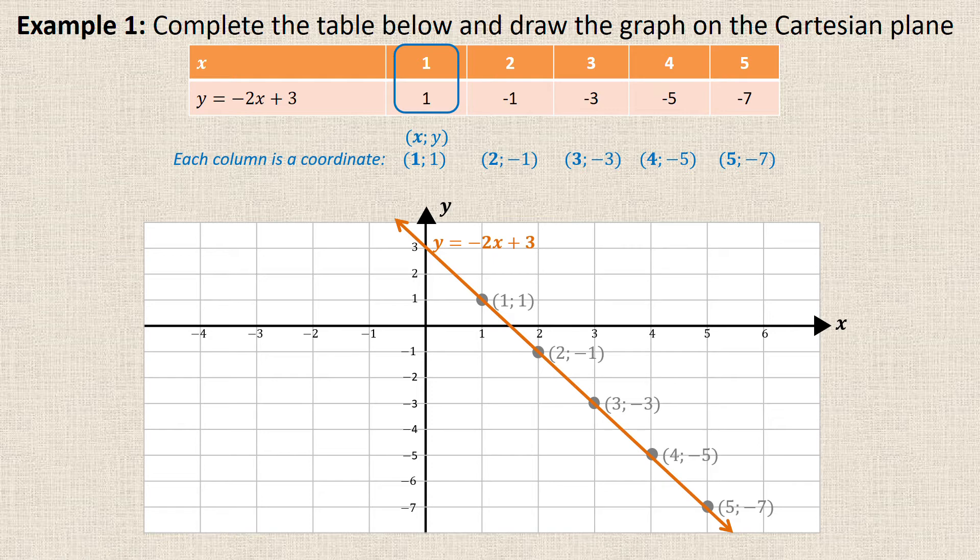You'd get a mark for your table, a mark for your plotting and the coordinate points correctly, and then a mark for actually joining the graph and labeling it. If you don't label your Cartesian plane properly, so for example these 1, 2, 3, 4, 5, 6 are all not the same width apart, then your graph is not going to be straight and you're not going to get the marks.